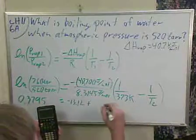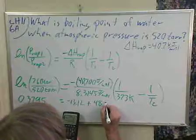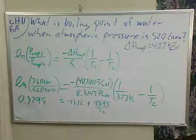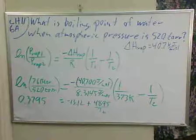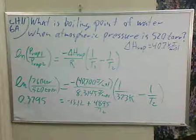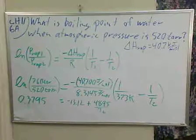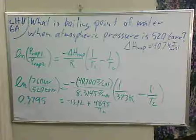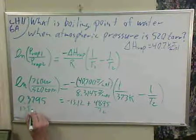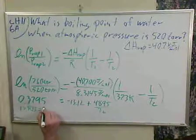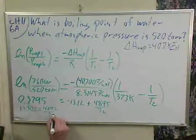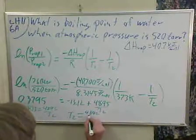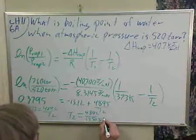So we got our positive there, plus 4895 over T2. Move this one over. So 13.1235 plus 0.3795, 13.503 equals 4892 over T2. T2 equals 4892 over 13.503 equals